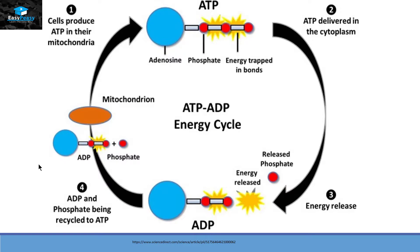ADP then goes back into the mitochondria and converts itself back into ATP. This cycle is called the ATP-ADP energy cycle. The details of the cycle will be explained in a separate video.